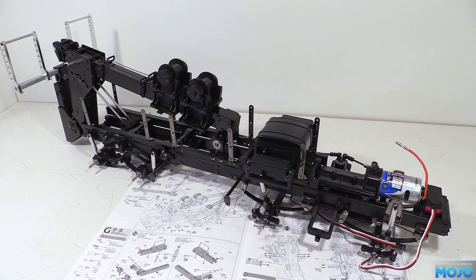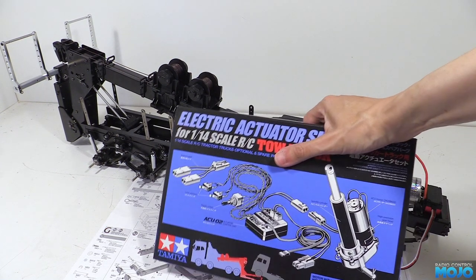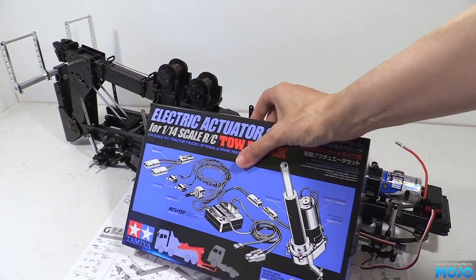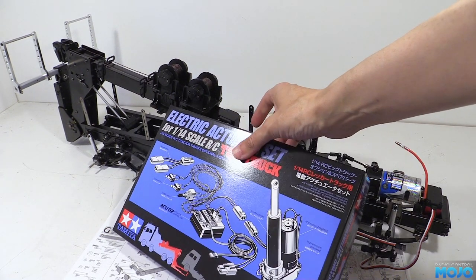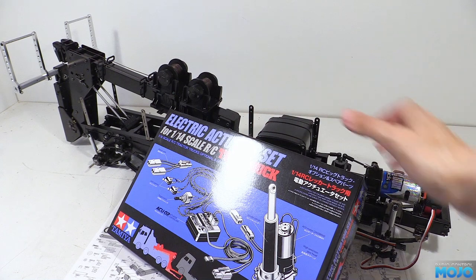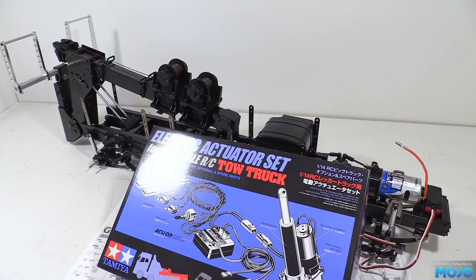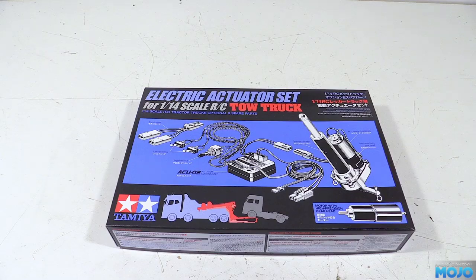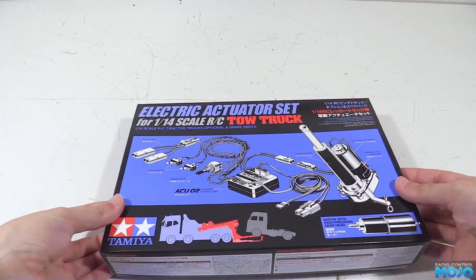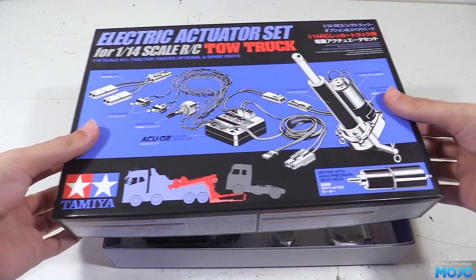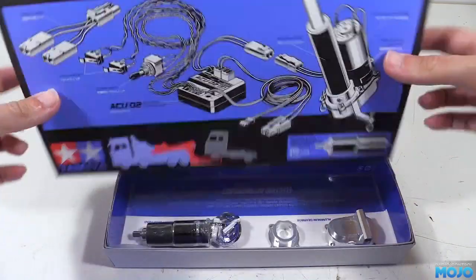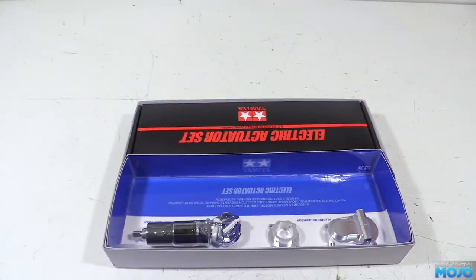Alright guys, welcome to RC Mojo. This week we're going to put together and fit the Tamiya electric actuator set for the Wrecker. It's a really high quality piece of kit, which it would need to be as it costs quite a bit. It's also worth noting that it really is a kit. A couple of my friends who've built a Wrecker were a bit surprised when they opened the box, but it's almost all very straightforward with only a couple of minor tripping points.